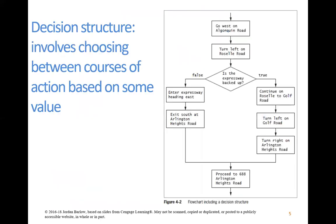What we're talking about in chapter four is what if there are different courses of action based on some value. In this example from the textbook — giving directions again — first you go west, then you turn left, but then you have to make a decision: is the expressway backed up? If it is, you take one course of action on the right-hand side; if it's not, you take the course of action on the left-hand side. This is a visual way to map out directions that include some decision-making process and alternative paths.